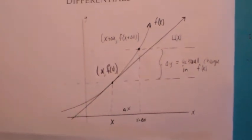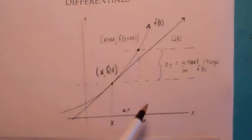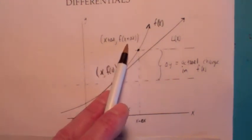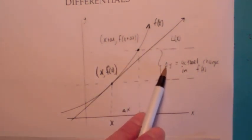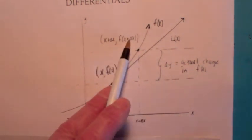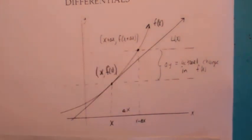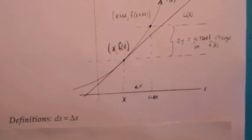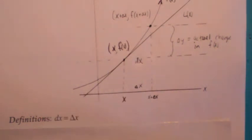We have a function f of x. When you have x as your x-coordinate, the point would be (x, f of x). If you go an additional delta x units, this is x plus delta x, and the second point would be (x plus delta x, f of x plus delta x). Let L of x be the tangent line at x. Delta y is the actual change in the function value — this y-coordinate minus this y-coordinate, that vertical distance. We define the differential of x, dx, to be delta x. And we define the differential of y to be f prime of x times dx.